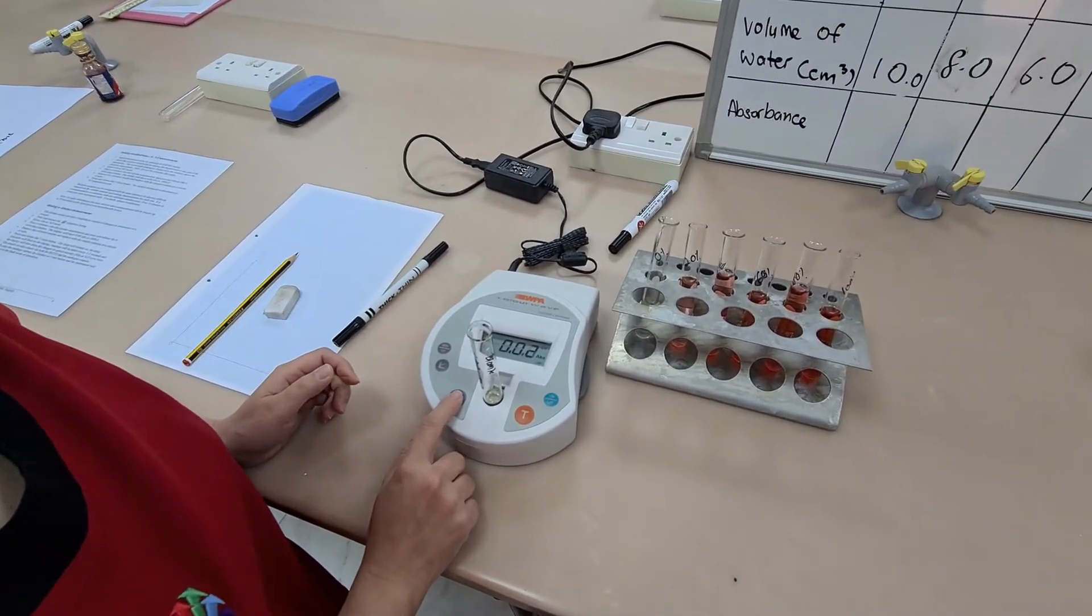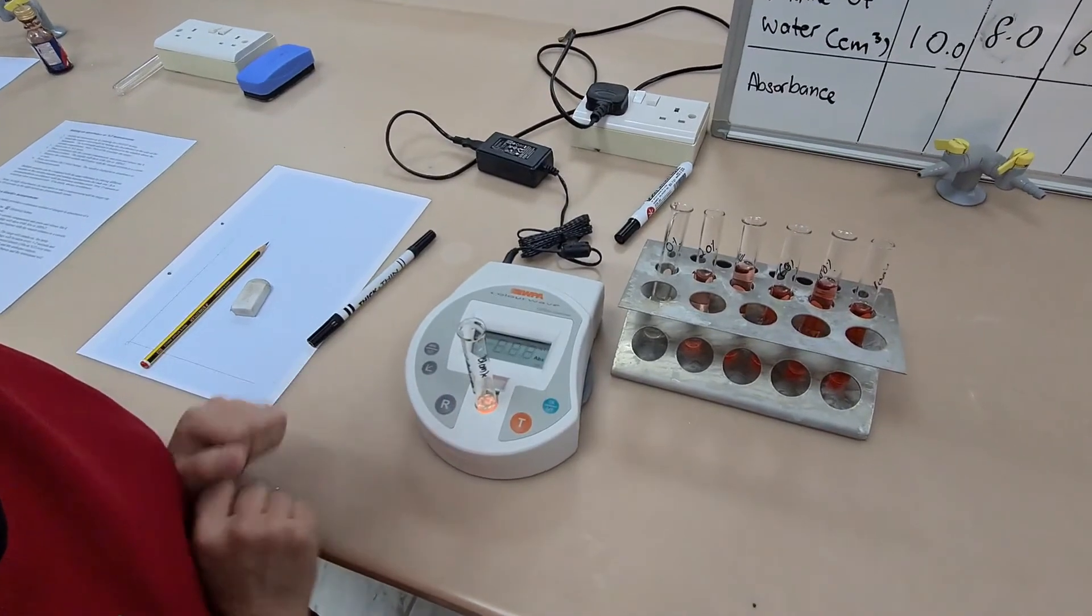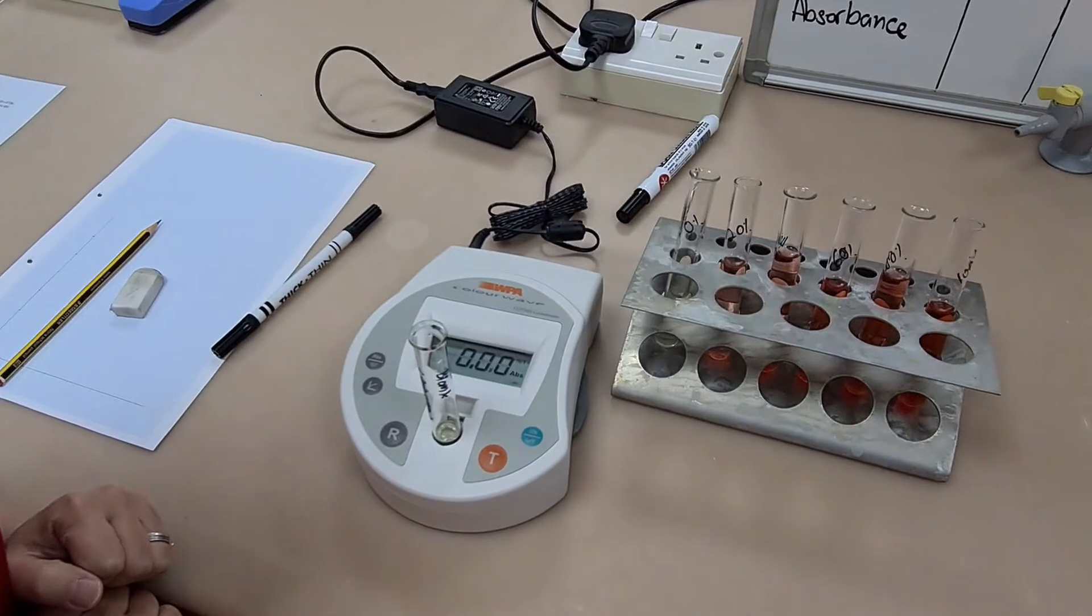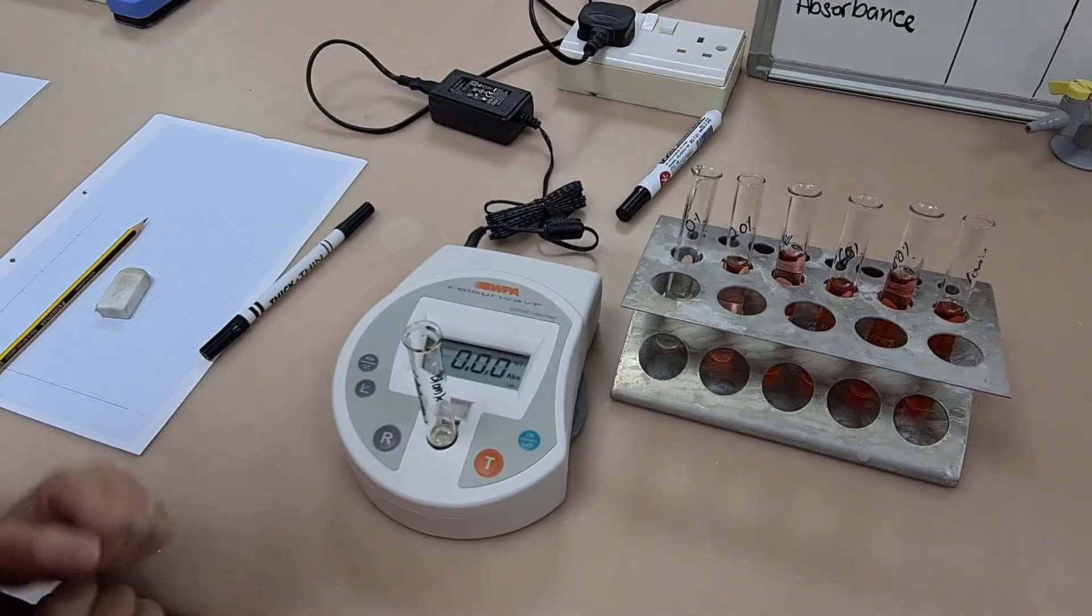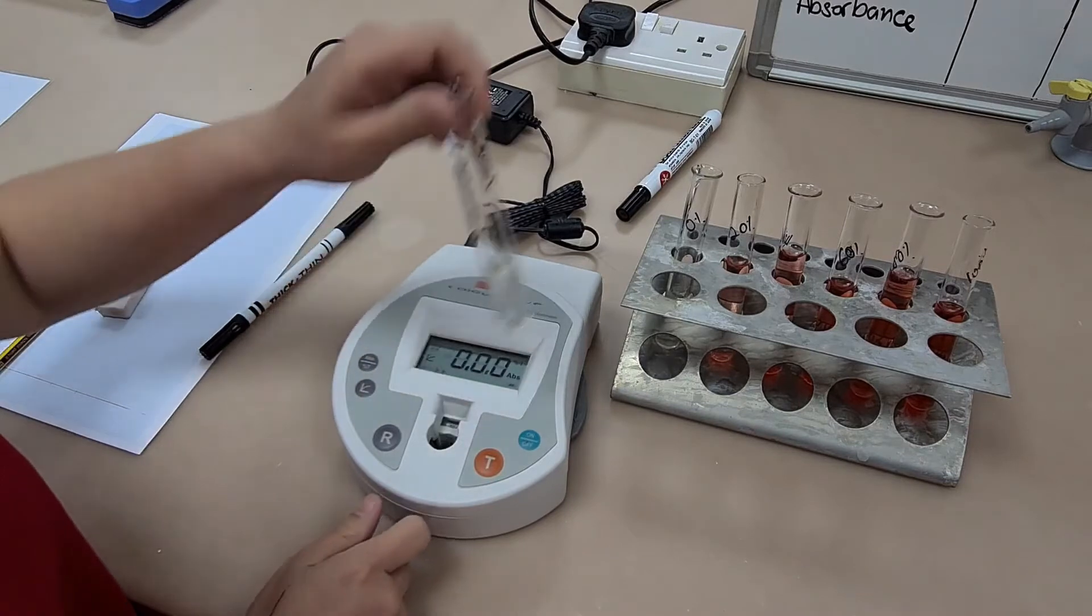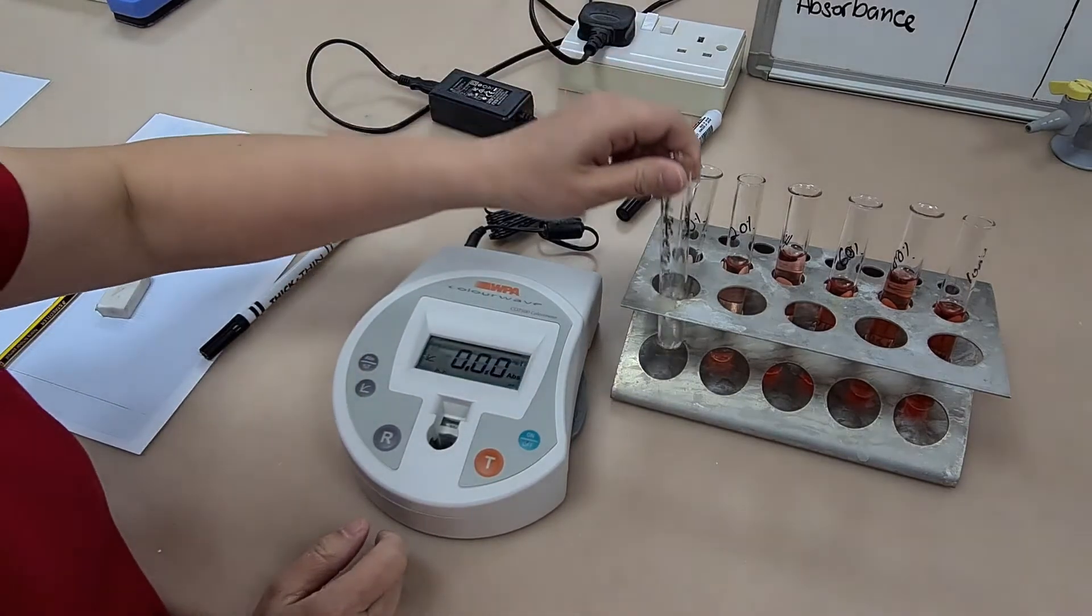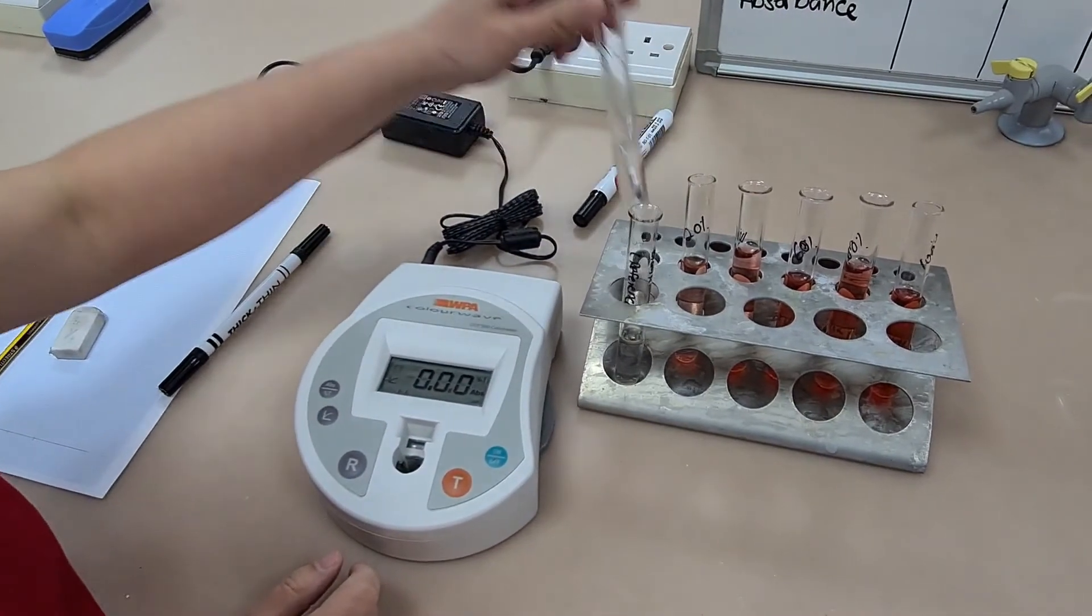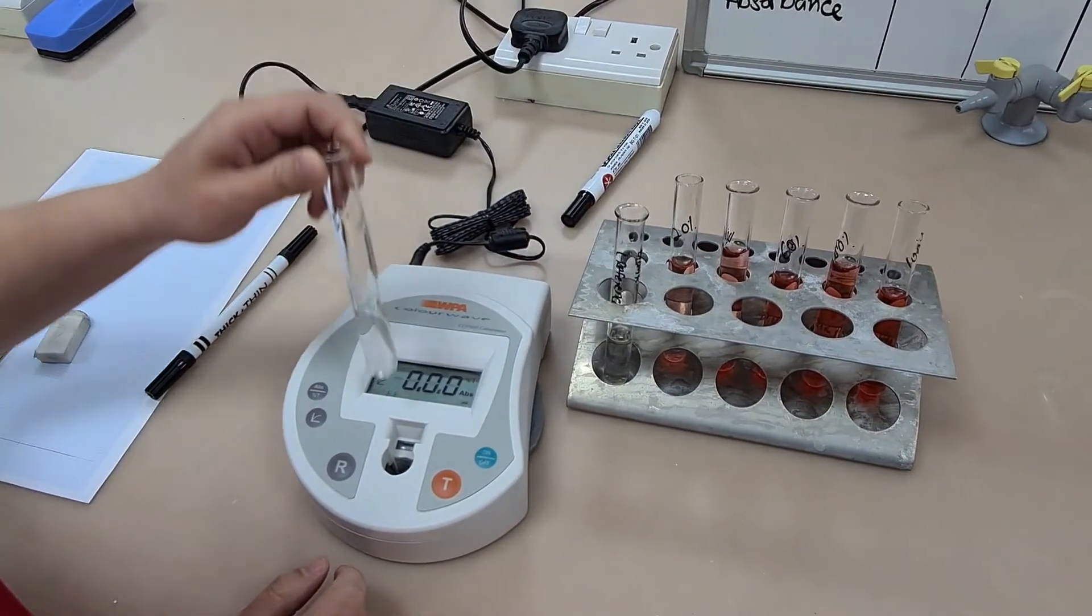Then you need to tare the colorimeter and that just means taking it to zero, very much like you would do with a digital balance. Now in this case we are calibrating our colorimeter with water but that's not always the case. For example, if you were using a Benedict solution you might tare it with a blue solution first.